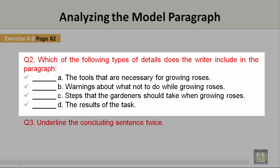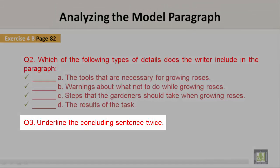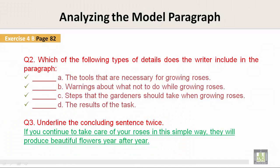Question two: which of the following types of details does the writer include in the paragraph? He includes all of them: A, the tools that are necessary for growing roses; B, warnings about what not to do while growing roses; C, steps that the gardener should take when growing roses; and D, the results of the task. Underline the concluding sentence twice: 'If you continue to take care of your roses in this simple way, they will produce beautiful flowers year after year.'